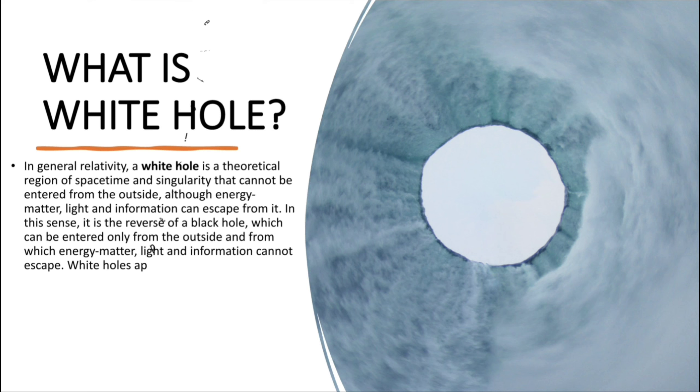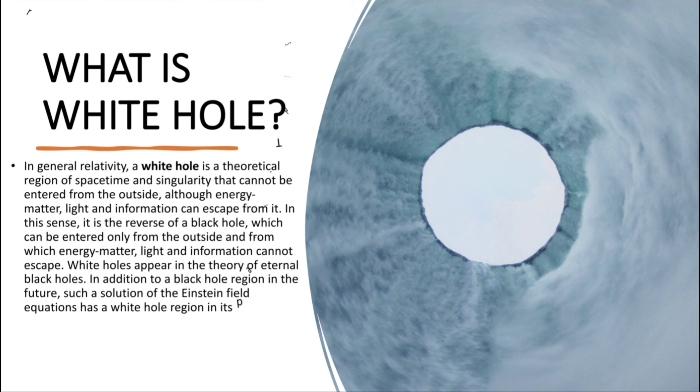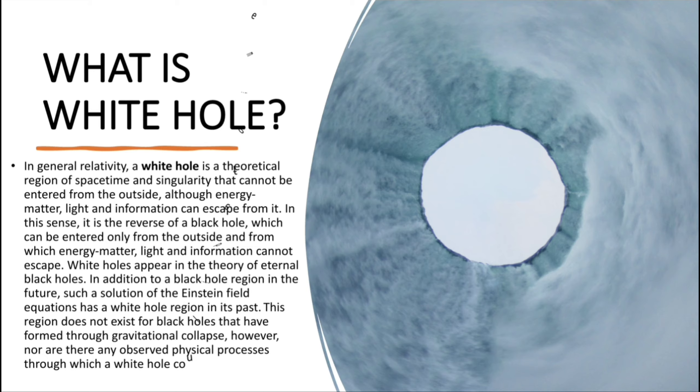White holes appear in the theory of eternal black holes. In addition to a black hole region in the future, such a solution of the Einstein field equations has a white hole region in its past. This region does not exist for black holes that have formed through gravitational collapse, however, nor are there any observed physical processes through which a white hole could be formed.